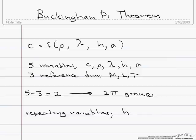Once we have picked h, we can no longer pick lambda because lambda has the same dimensions, L, as h. So that leaves us our repeating variables: h, rho, and sigma.